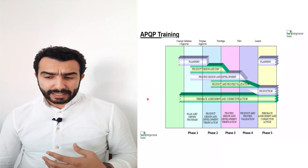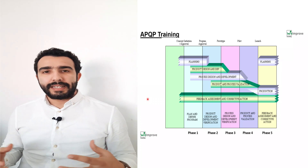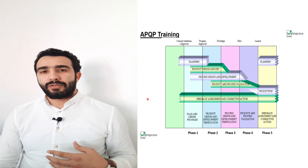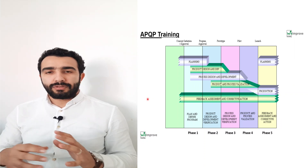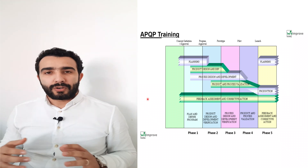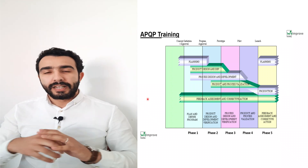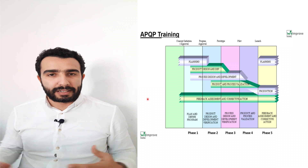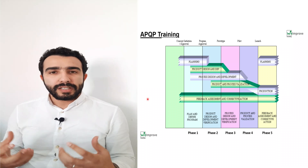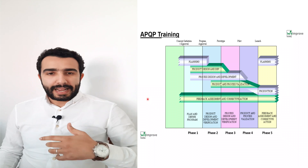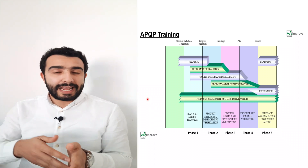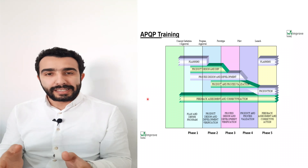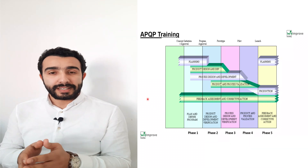In general, in every field or industry, a project manager builds his planning and project chart based on his experience and the activity of the project. He can start and end by anything he needs — the only purpose is to deliver the project at the end. But in the automotive industry, it's not the case.